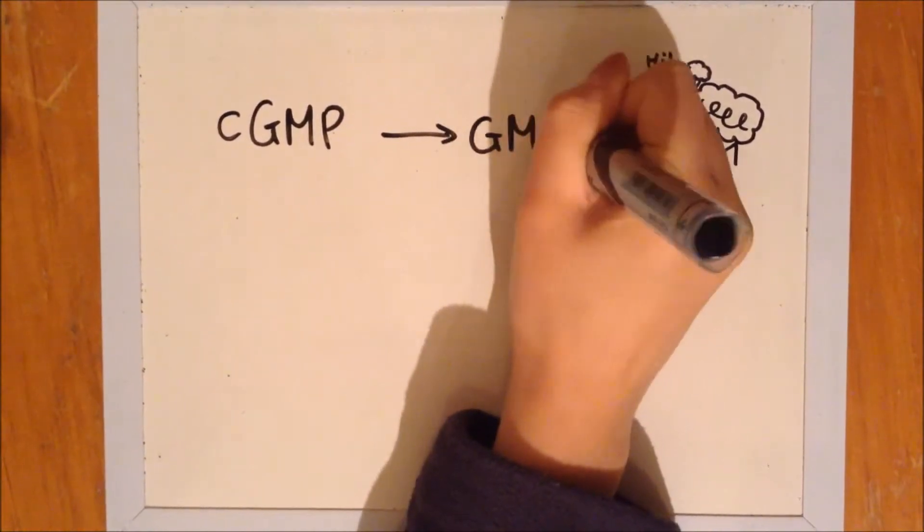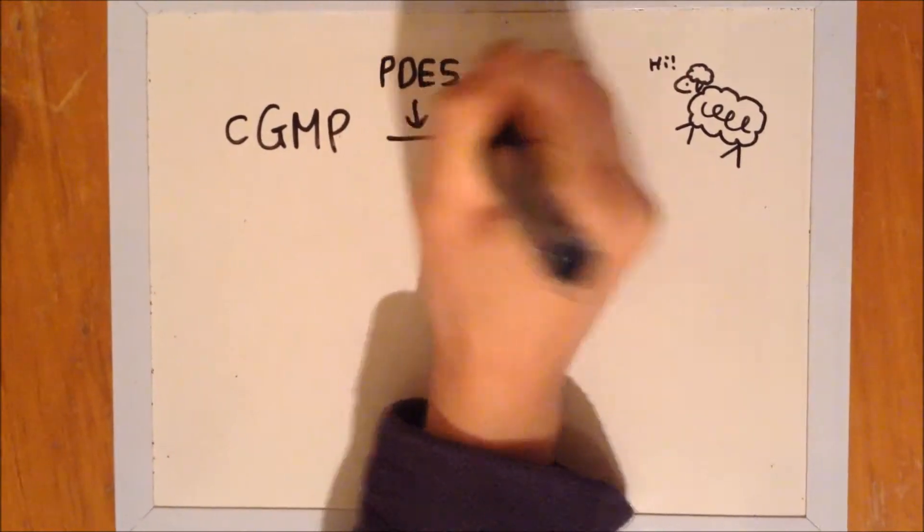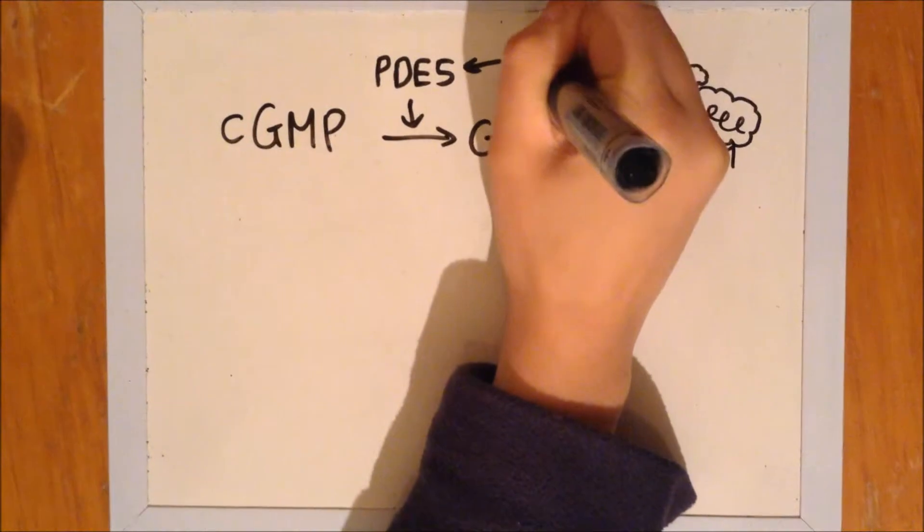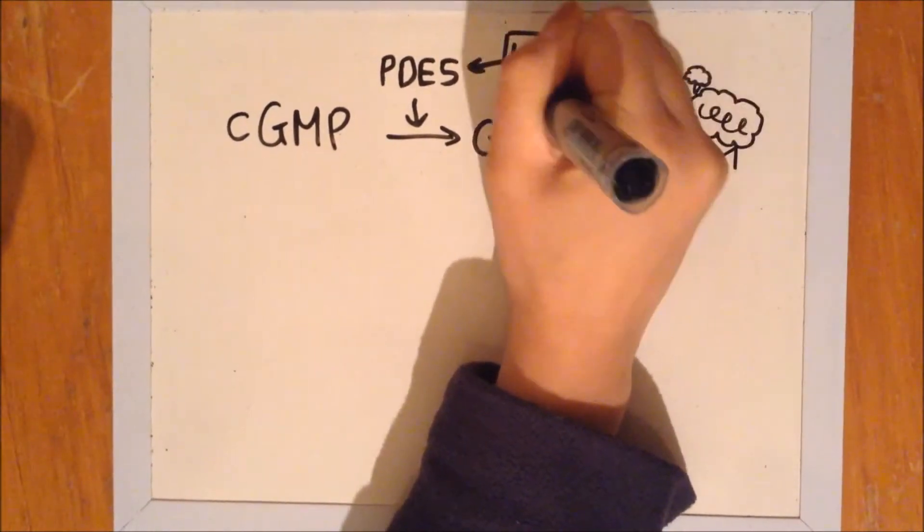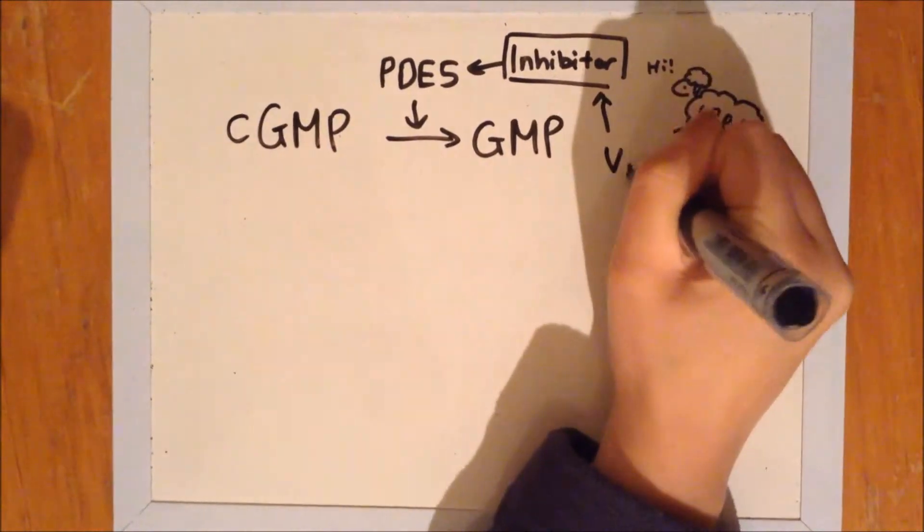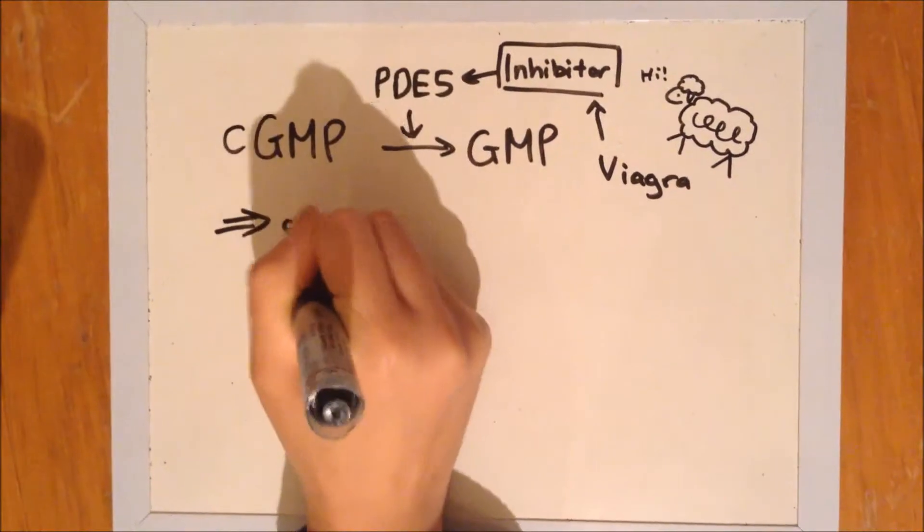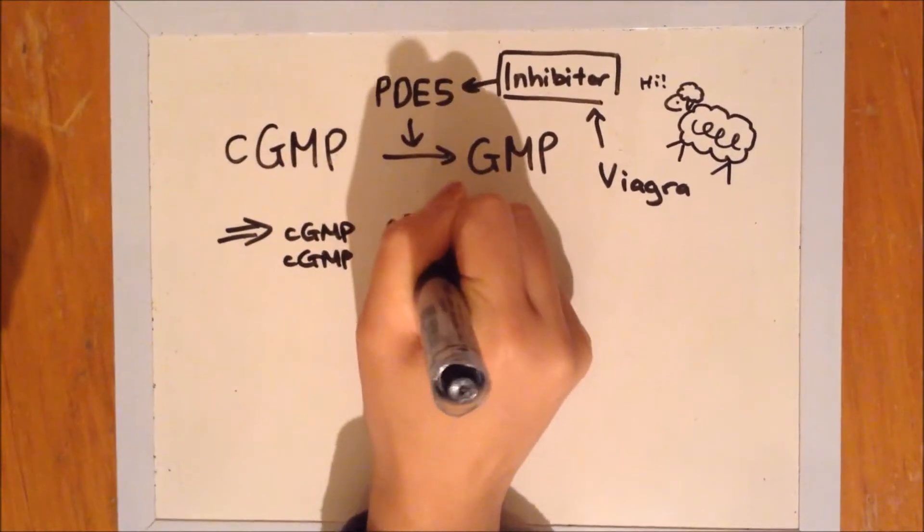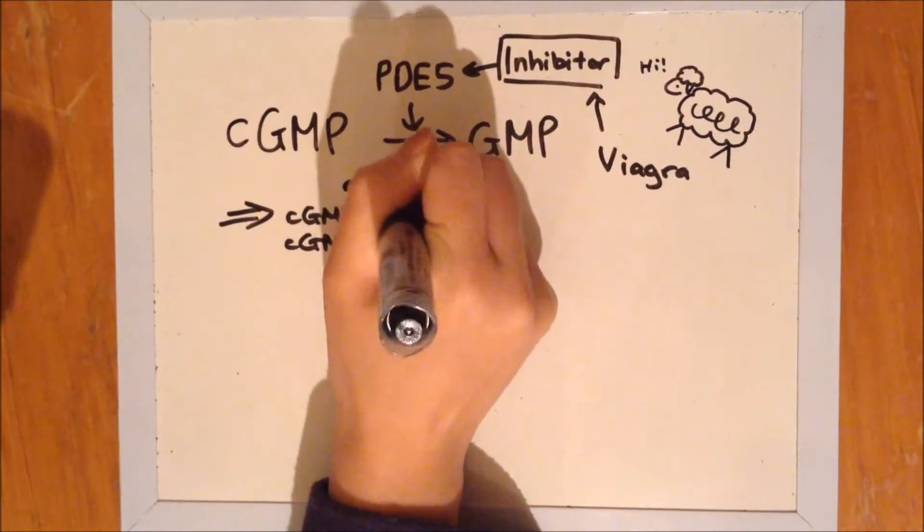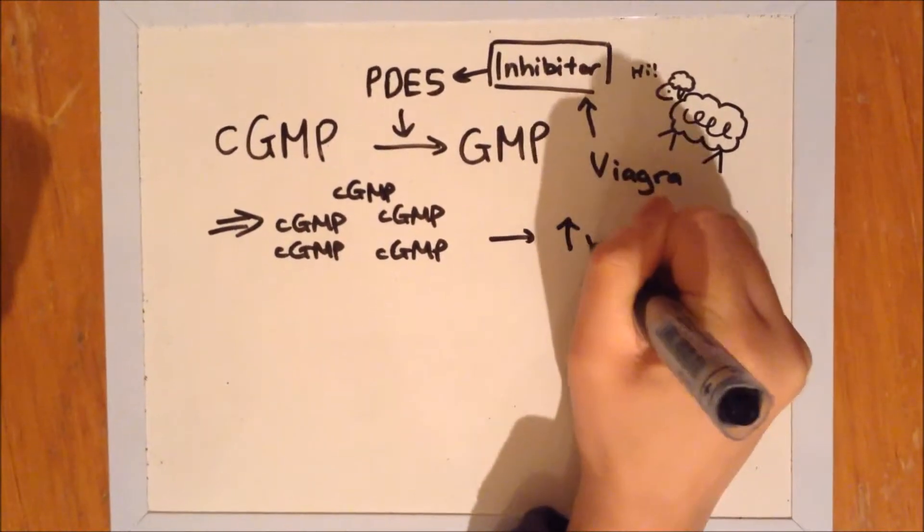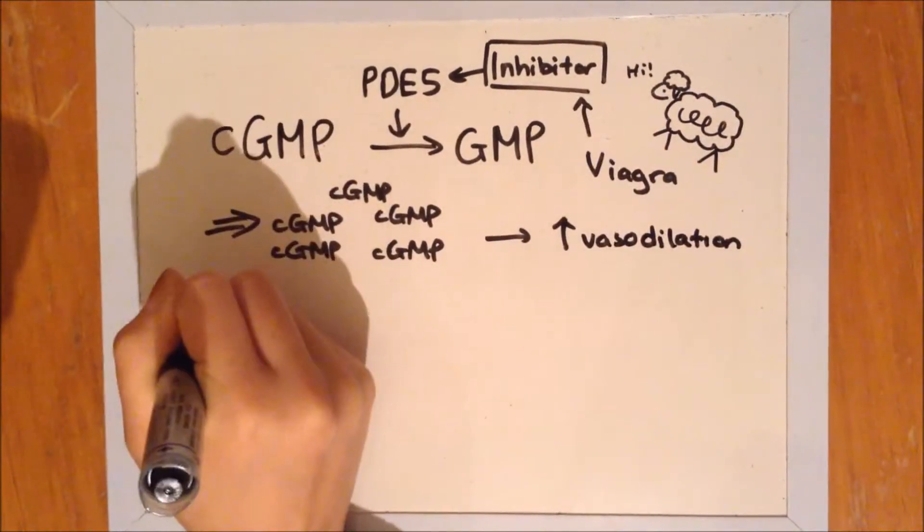In normal circumstances, cyclic GMP is degraded to GMP by PDE5. This can be inhibited by drugs such as sildenafil citrate, also known as Viagra. This causes a buildup of cGMP and this acts on protein kinase G-dependent smooth muscle and causes relaxation and thus vasodilation.